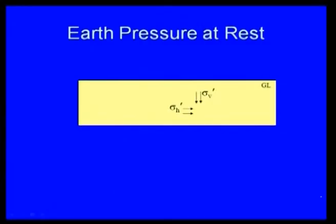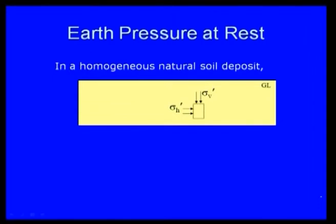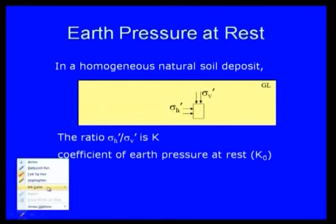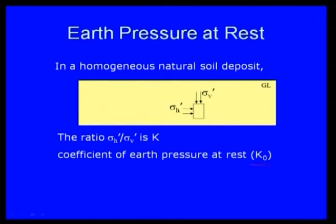Last class we started earth pressure in the retaining wall and different earth pressure theories as a basic introduction. Earth pressure has been used in the design of reinforced soil mass. We covered earth pressure at rest: for a homogeneous natural soil deposit, the ratio of sigma H prime to sigma V prime is called K0, the coefficient of earth pressure at rest.